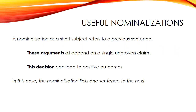Now, there are times when you want to use nominalizations — it can be a useful technique. If it happens in English, it can't always be wrong. One valid use is when a nominalization serves as a short subject to refer to the previous sentence. Examples: 'These arguments all depend on a single unproven claim.' 'This decision can lead to positive outcomes.' In both cases the nominalization — 'these arguments,' 'this decision' — links one sentence to the next, referring back to something discussed in the previous sentence. Here it's useful because it connects the sentences.